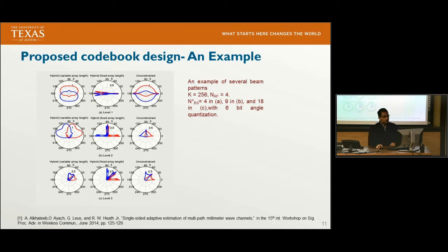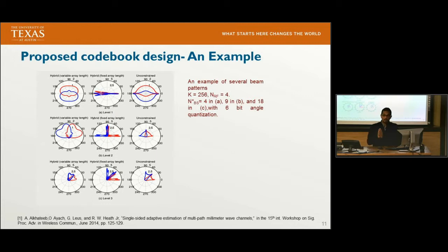In our technique, we approximate a wide beam with a few wide RF beams and apply digital baseband precoding to compensate for RF limitations. It has been shown in prior work that as the number of RF chains increases, the beam patterns from a fixed array length approach those of digital precoding.